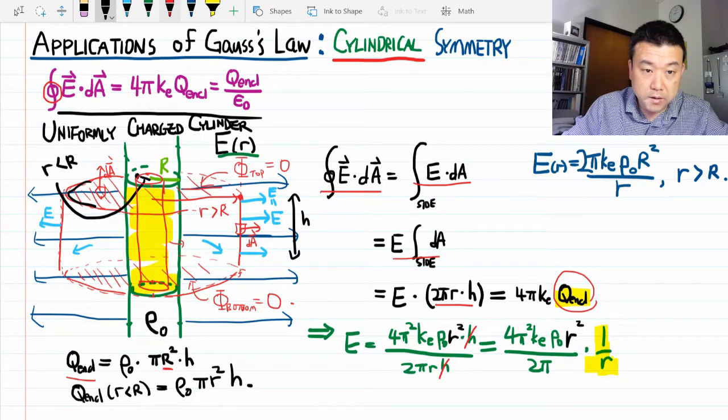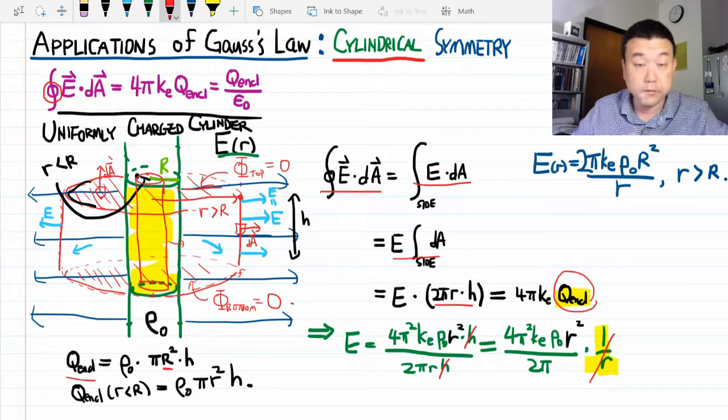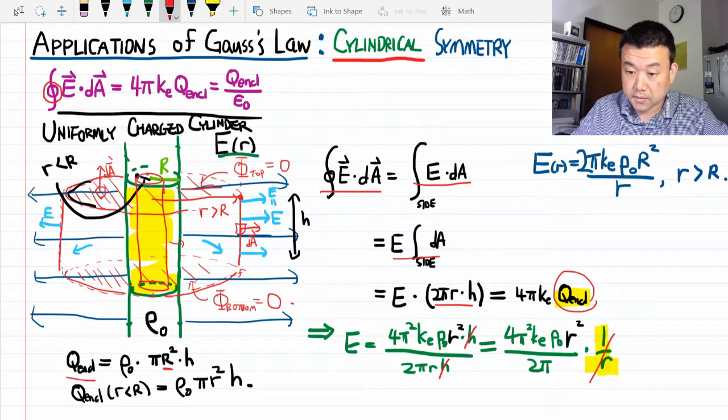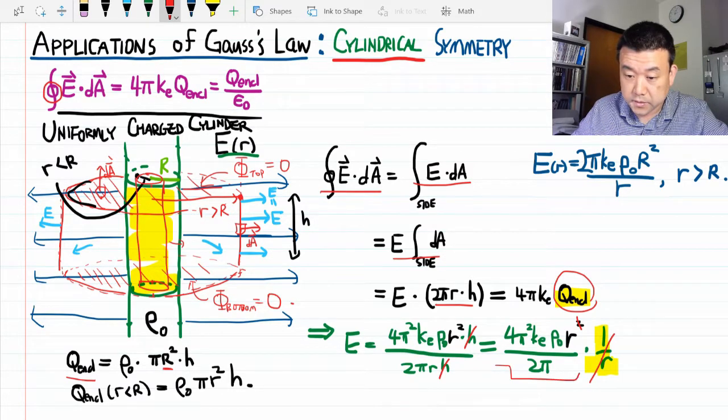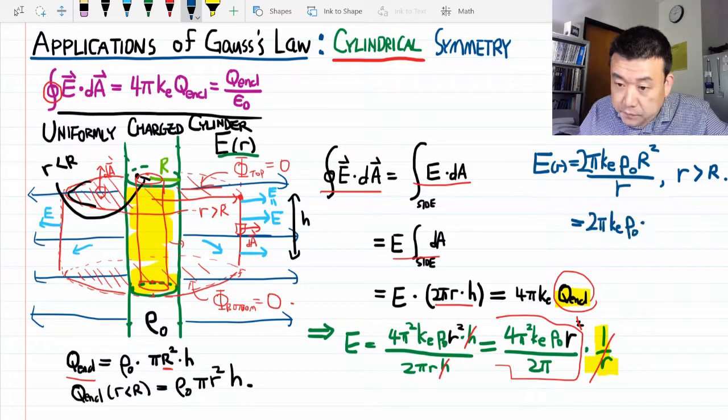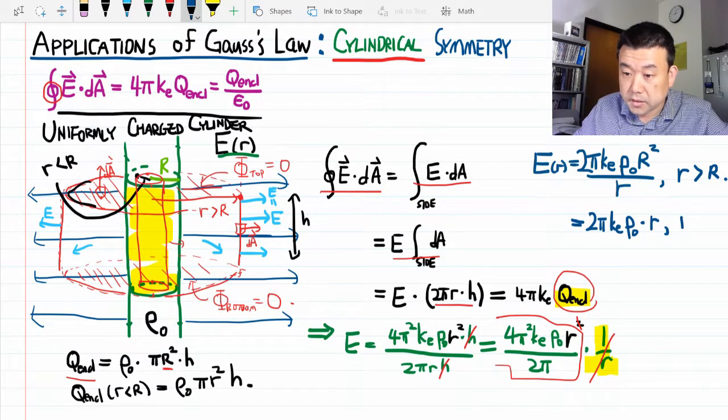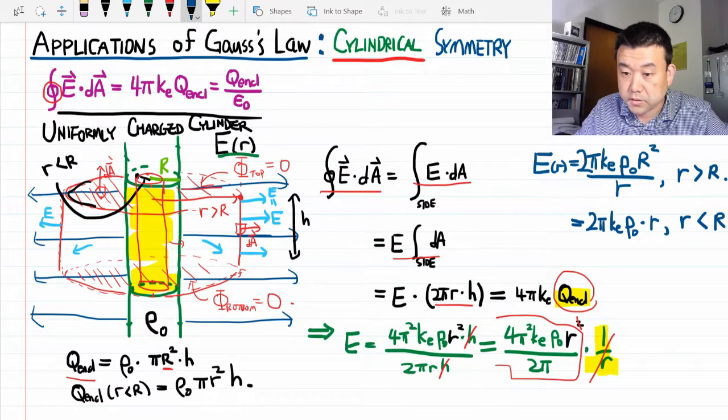Oh, there's a cancellation. The factor of 1/r that we had before cancels with one factor of r. This is the answer: the electric field is constants times r, for distances from the axis less than the radius of the cylinder.